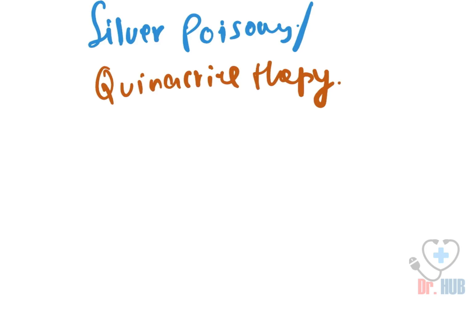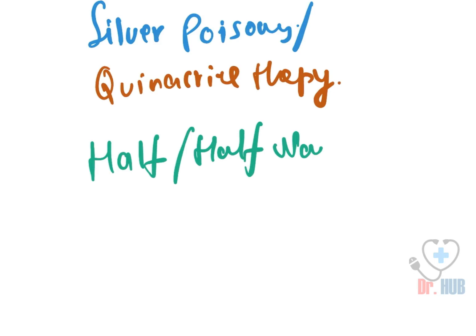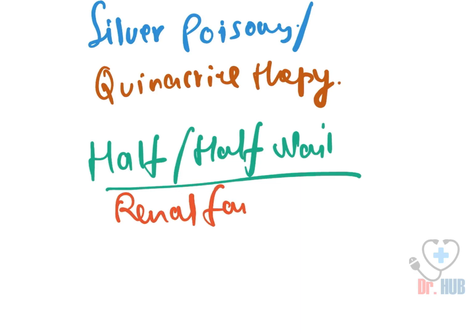Next we look at half and half nails. Half and half nails are very specific to renal failure — they are seen in cases of renal failure.